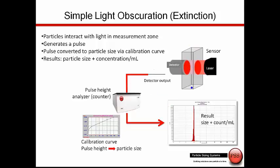A calibration curve is used to equate pulse height to particle size. One at a time, we build the particle size distribution, both the particle size and the concentration in particles per ml.